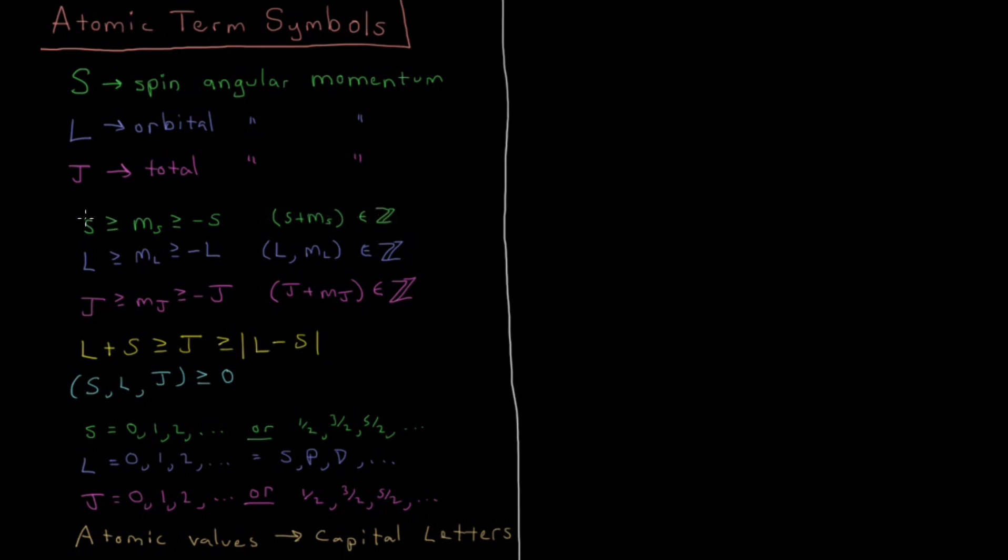So if s is, for example, 1, then m sub s could be 1, 0, and minus 1. If s is 1 half, m sub s can be plus 1 half and minus 1 half. s can be any half integer value, so that gives you 2s plus 1 values of m sub s.